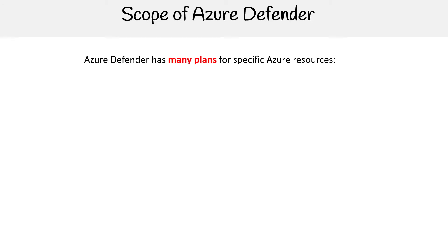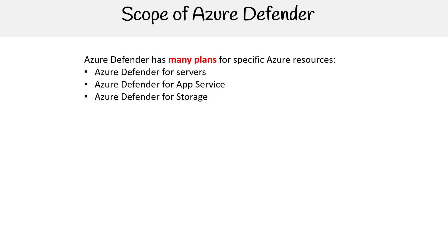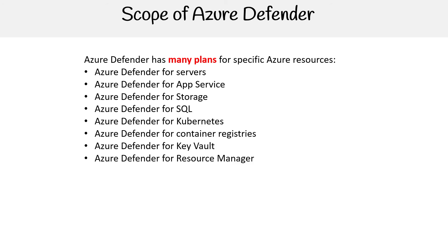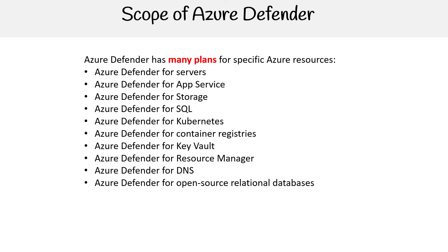Regarding the scope of Azure Defender, it has many different plans for specific Azure resources: Azure Defender for servers, app service, storage, SQL, Kubernetes, container registry, key vault, resource manager, DNS, and open source relational databases. When you turn on Azure Defender, all plans are activated, as we saw under the advanced protection tab.